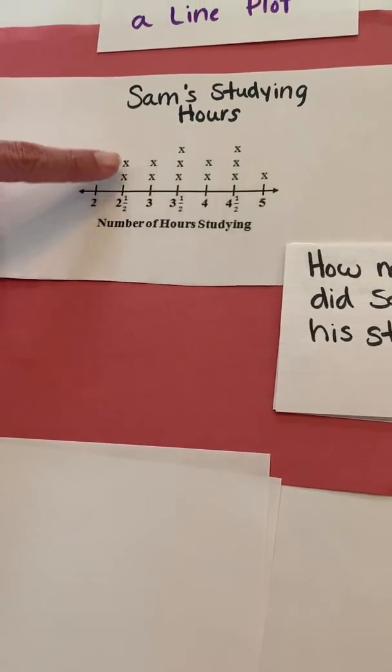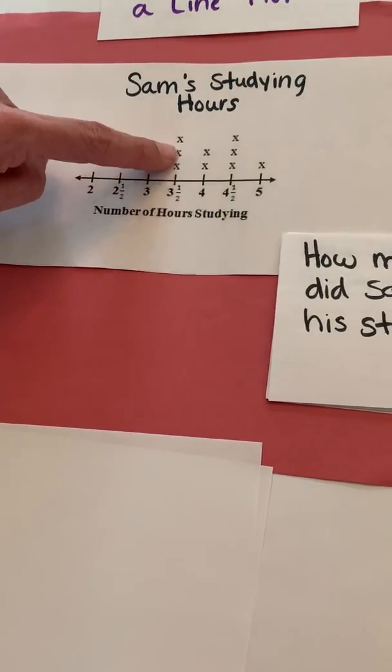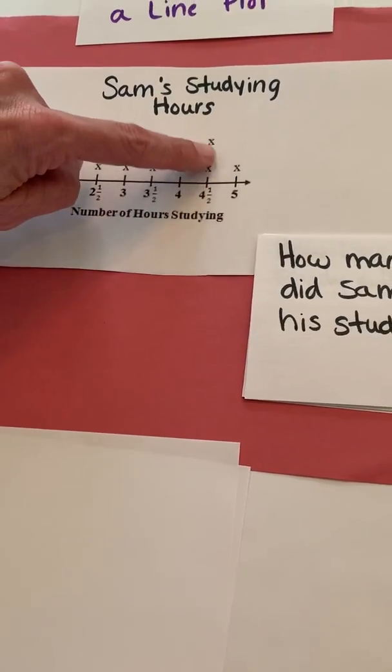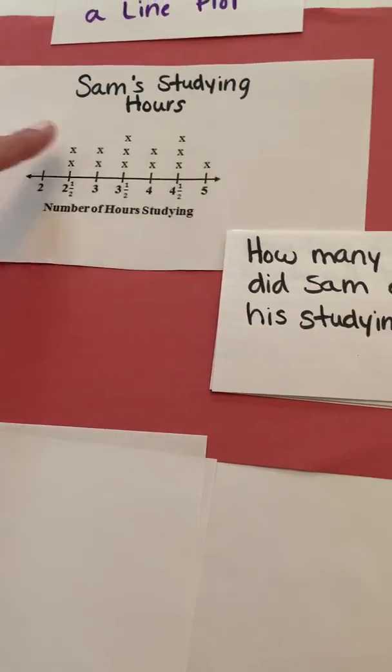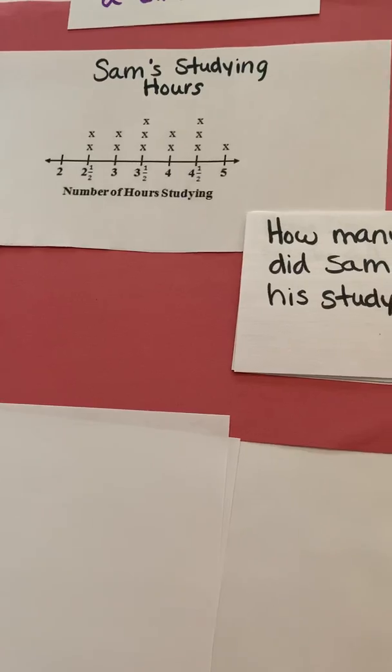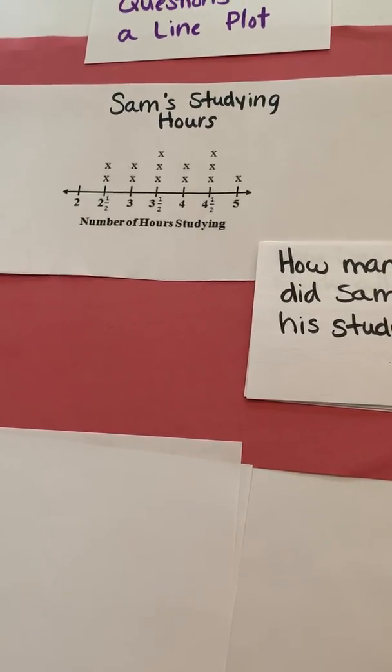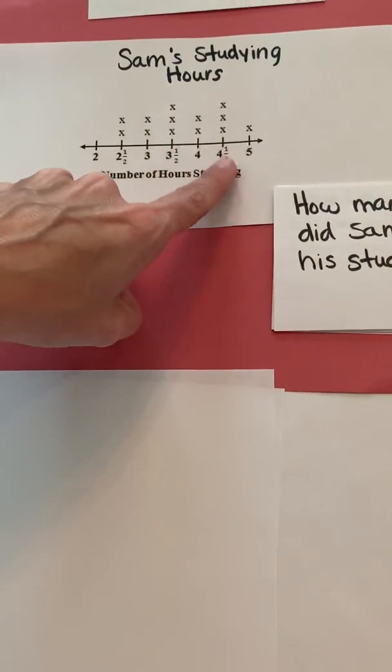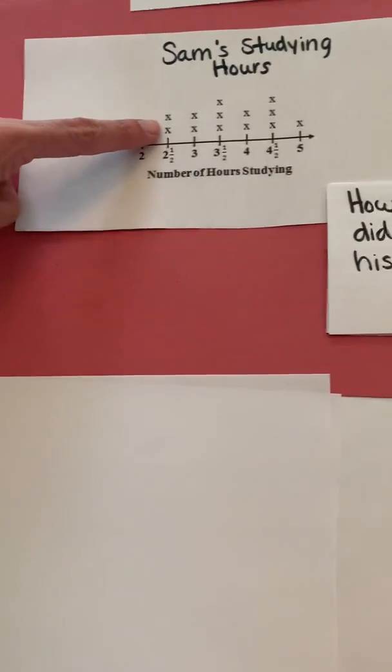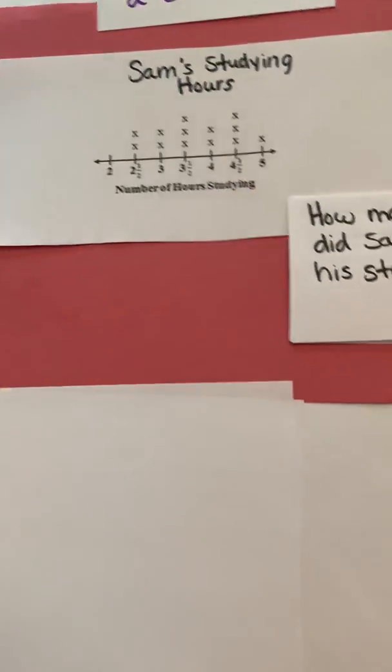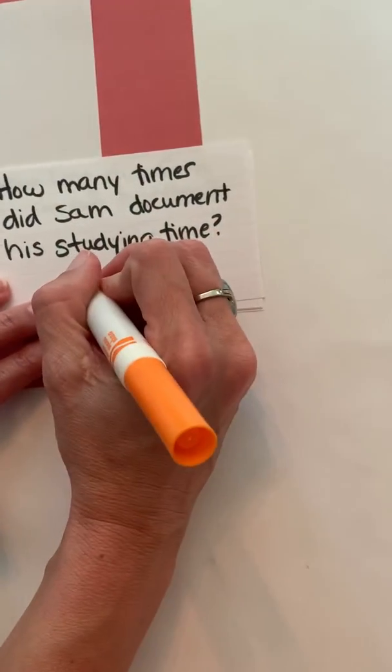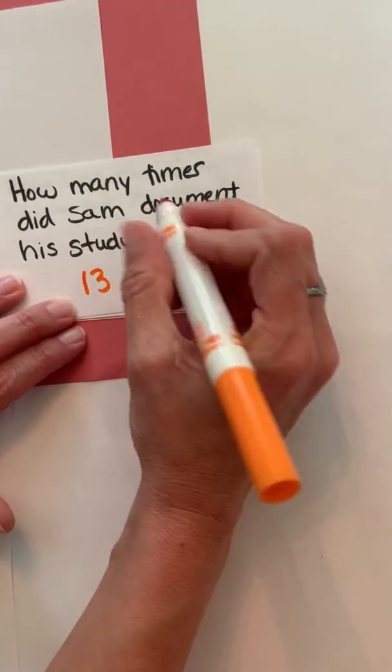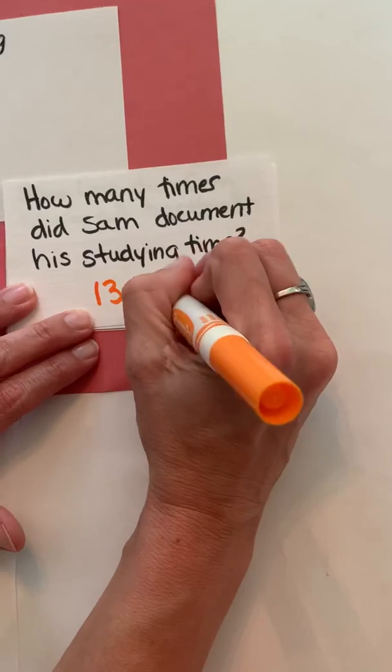So I can count 1, 2, 3, 4, 5, 6, 7, 8, 9, 10, 11, 12, 13. You definitely want to check yourself and recount it twice to make sure. Another way that you could count this is using some of your skip counting skills. I know that 3 and 3 is 6 and then 8, 10, 12, 13. So how many times did Sam document his studying time? That would be 13 times.